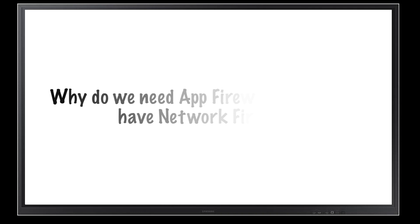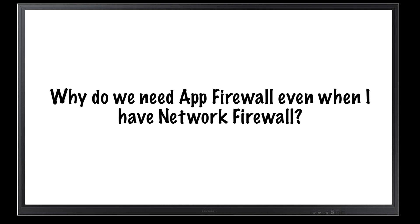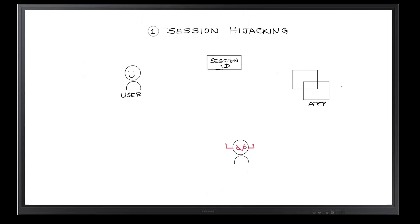Let's deep dive into those specific business logic abuses to understand why we really need an app firewall even though we have a network firewall. When you log in to any web application, most web apps assign a unique identifier for your session. You log in to a particular web app and it assigns a session ID, which we can call a cookie. The objective of this session ID is to provide a frictionless experience.